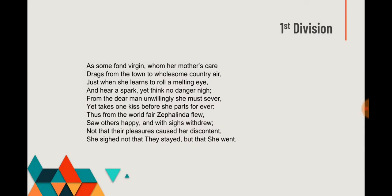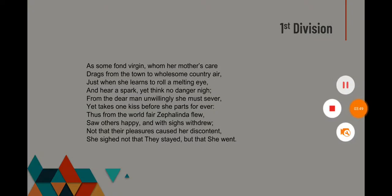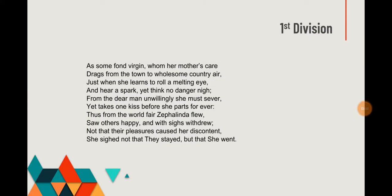The first division of the poem is the introduction, in which the poet presents and expresses the case of Miss Blount briefly — that is, her departure from the town to the countryside, from the city to the countryside, and the mental and emotional state in which she left the town to her village.